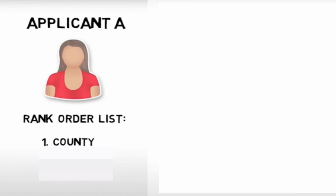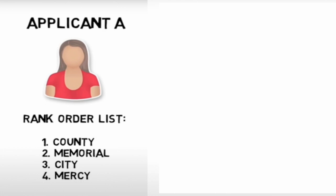The rank order list is very important. You're going to rank programs according to your preference, and usually they should be of one or two specialties, no more. Let's say you're applicant A and you prefer program County as your number one choice, then Memorial second, City third, and Mercy fourth. These are just examples from the NRMP website — this is your preferred order.